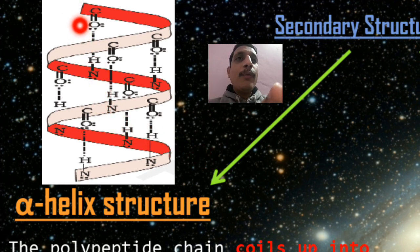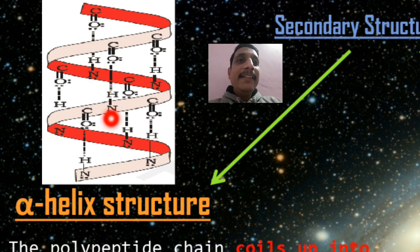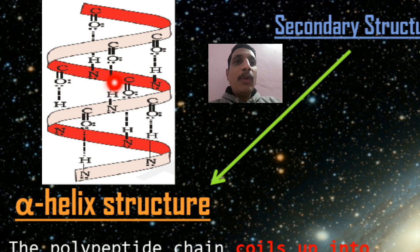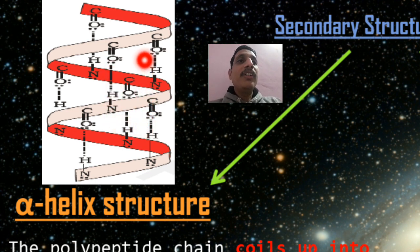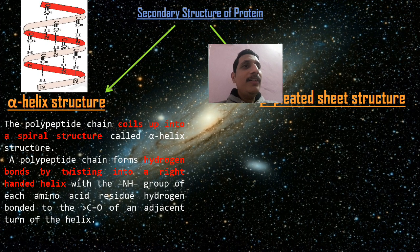The C=O links with NH through a hydrogen bond — you can see this as dotted lines in the diagram. This NH links with C=O through a hydrogen bond. These hydrogen bonds make the alpha helix secondary structure more stable.